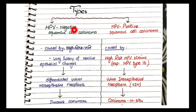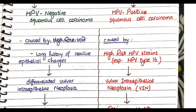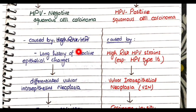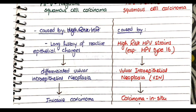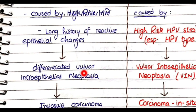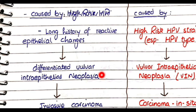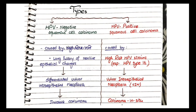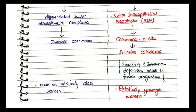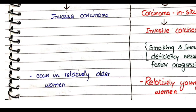In contrast, HPV-negative squamous cell carcinoma is caused by a long history of reactive epithelial changes in the skin of the vulva — not by HPV infection. These reactive changes lead to a precursor lesion known as differentiated vulvar intraepithelial neoplasia (DVIN), which ultimately transforms into invasive carcinoma. Compared to HPV-positive cancers, HPV-negative cancers occur in relatively older women.